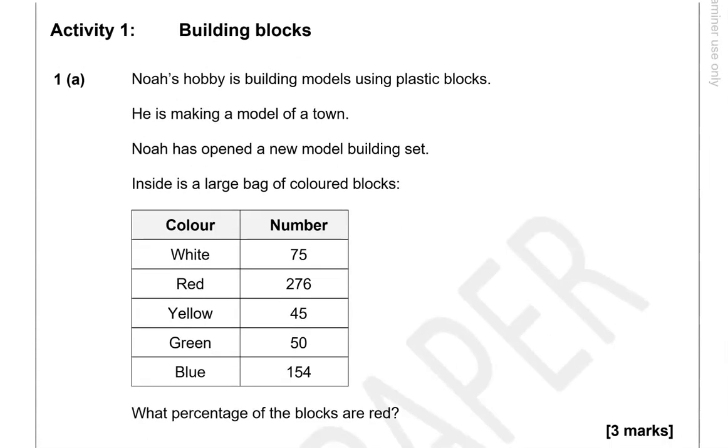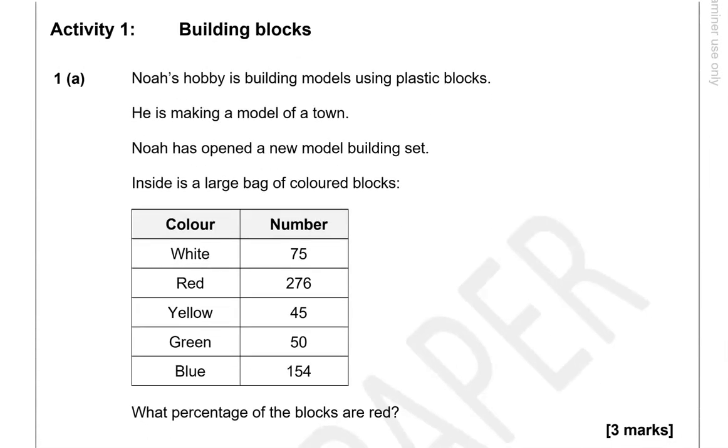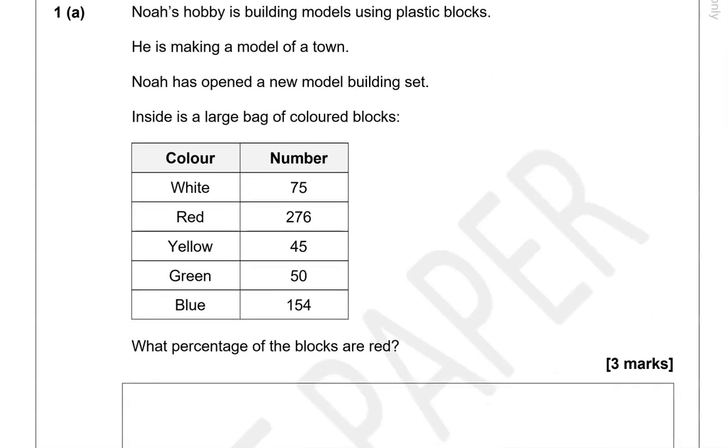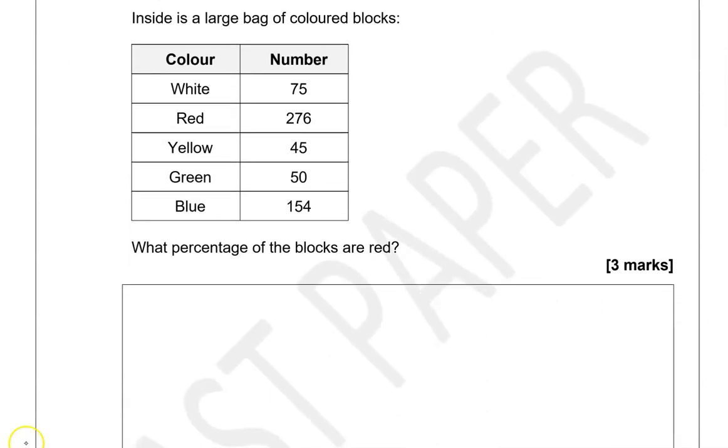This is the first part. Activity 1: Building blocks. Noah's hobby is building models using plastic blocks. He is making a model of a town. Inside is a large bag of colored blocks. What percentage of the blocks are red? So in red we've got 276 of them out of the total. So what is the total?